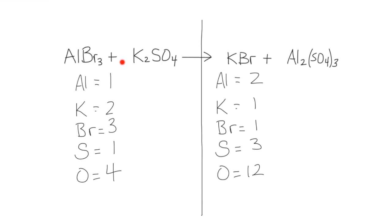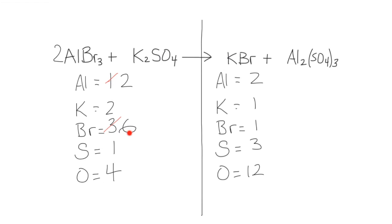We can only change the coefficients — the numbers out in front — and we can never touch the subscripts. Starting with aluminum: we have one on the left but two on the right, so we change the coefficient to two. That two out front multiplies everything in that compound, so aluminum becomes two, but it also affects the bromine — we had three, now multiplied by two gives us six bromines. We'll come back to bromine later.